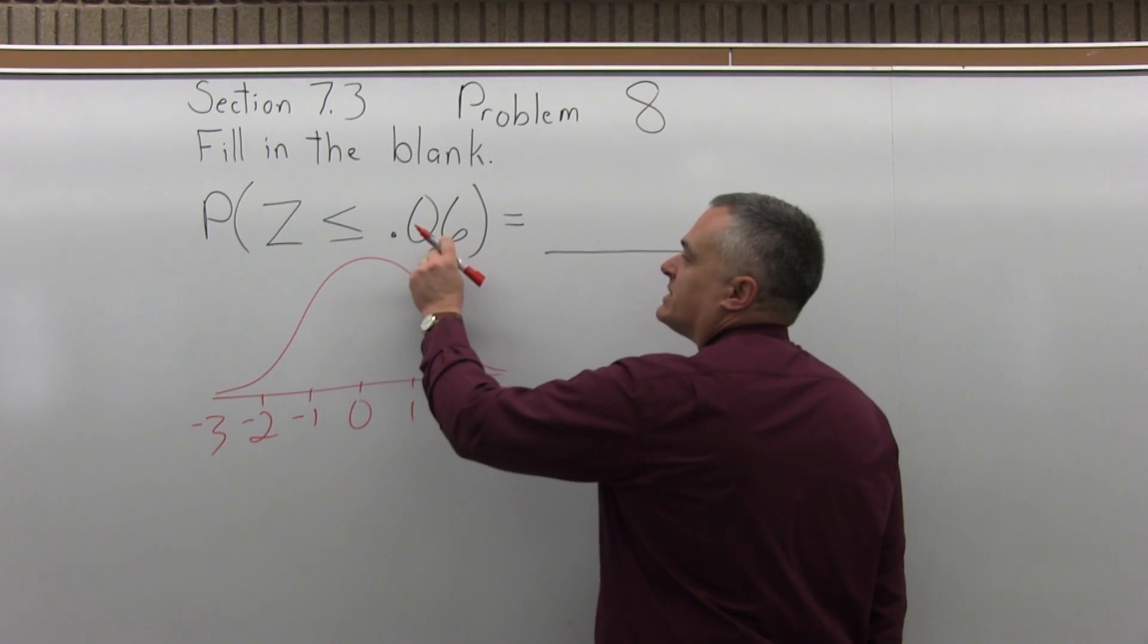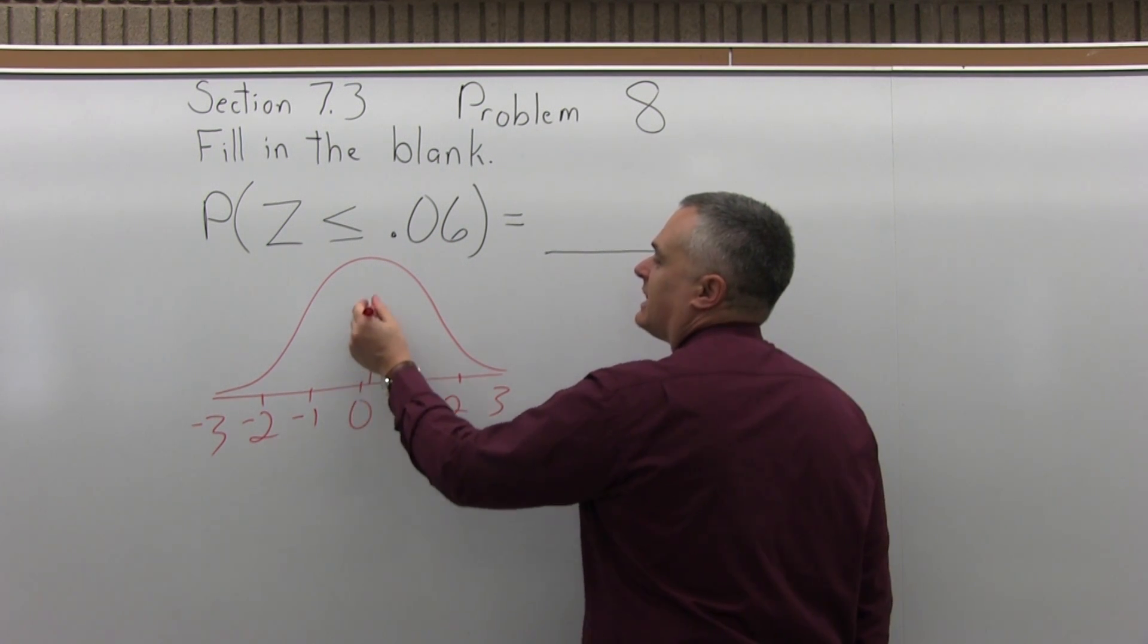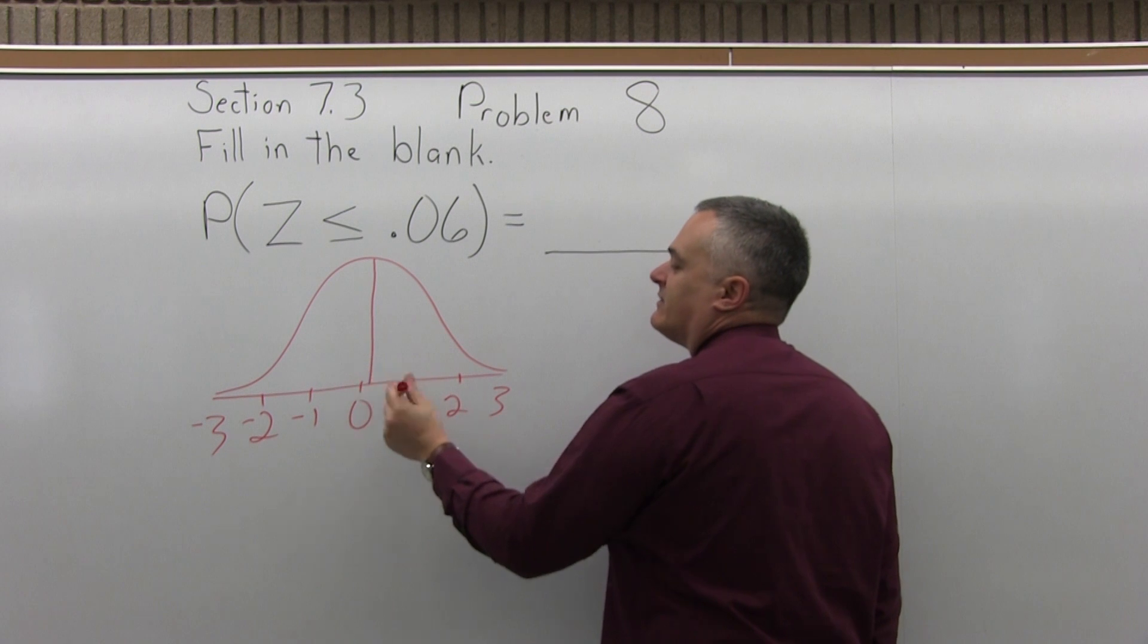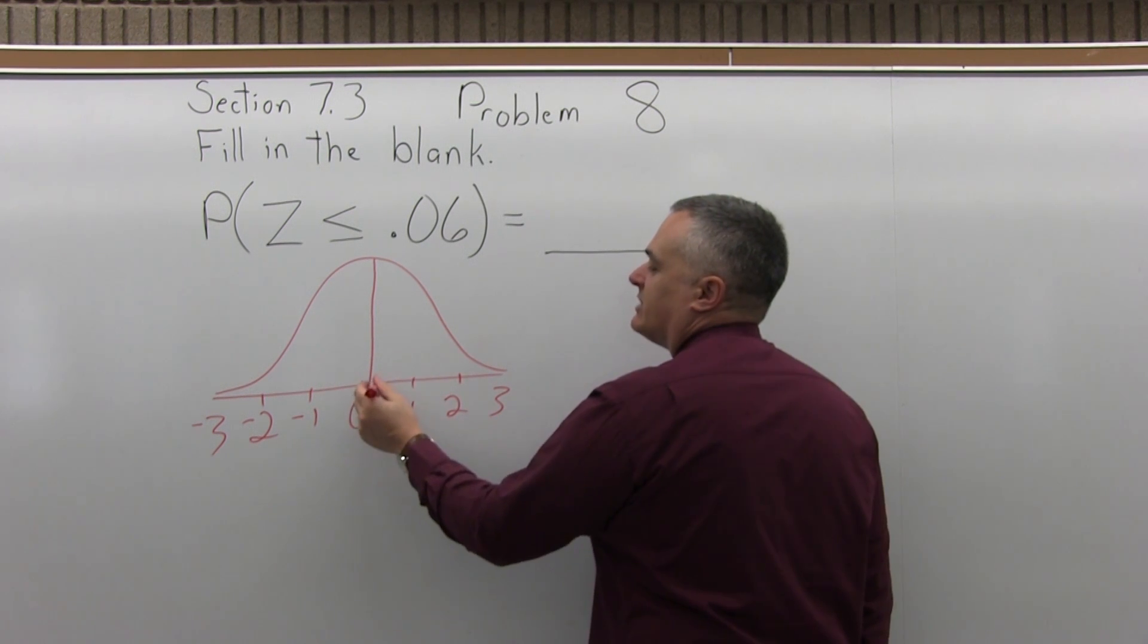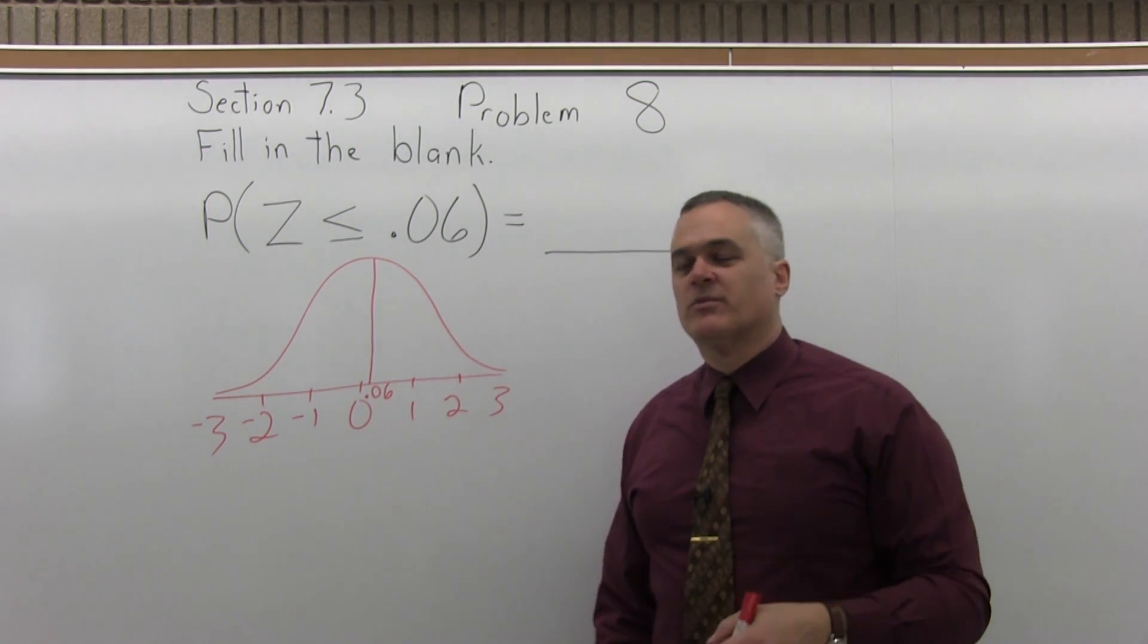And we're interested in 0.06. So 0.06 is only very slightly to the right of the 0. And again, these numbers underneath the bell curve represent how many standard deviations you are away from the average value.